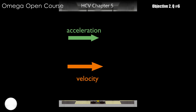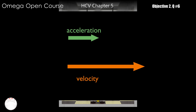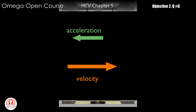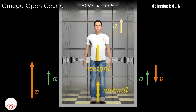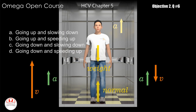Also, you know that if the speed of the body is increasing, then the acceleration must be in the same direction as velocity. Similarly, if the speed is decreasing, the velocity and acceleration must be in opposite directions. Thus, for the acceleration to be in the upward direction, either the elevator must be moving up with increasing speed or moving down with decreasing speed. So our answers are B and C.